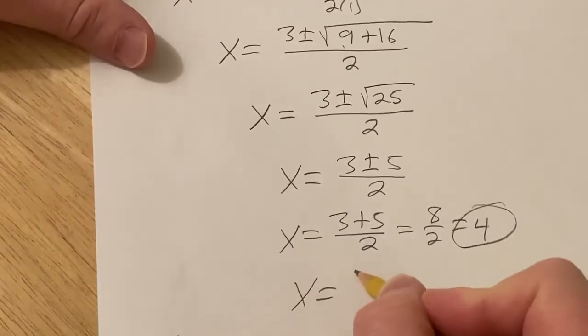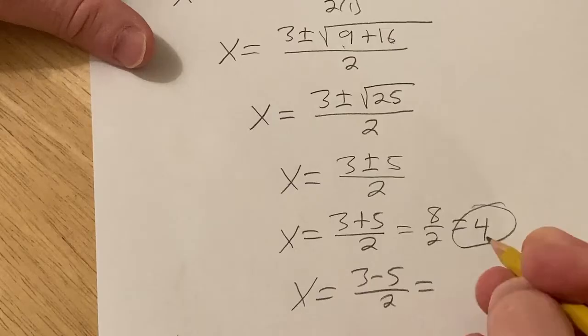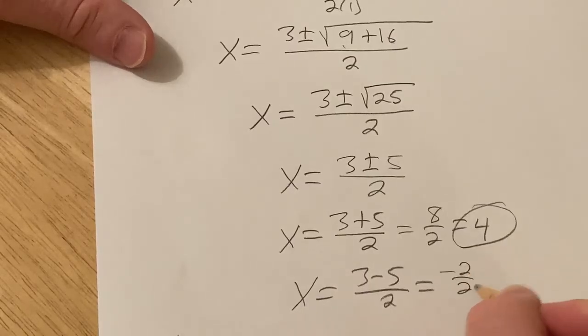The other one is x equals 3 minus 5 over 2, which is negative 2 over 2, which is negative 1, and that would be the answer there.